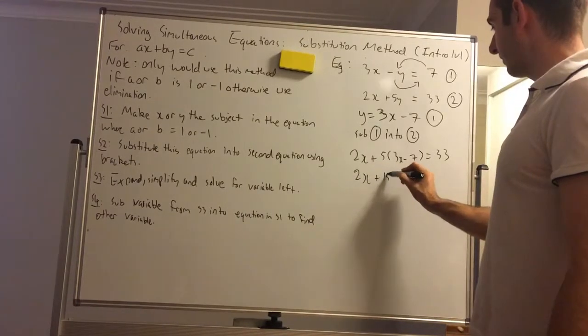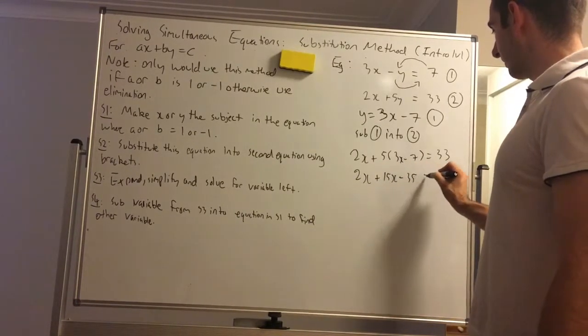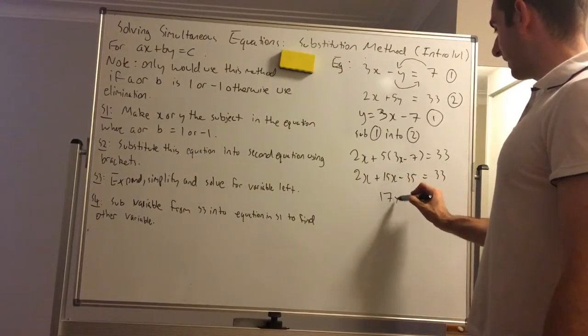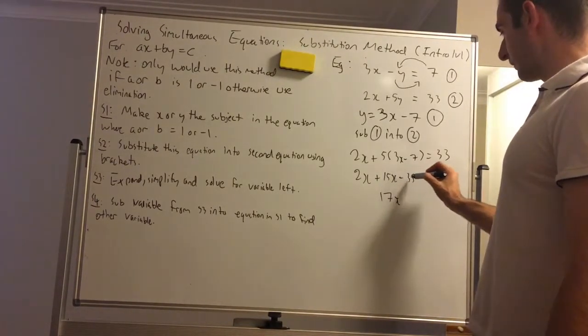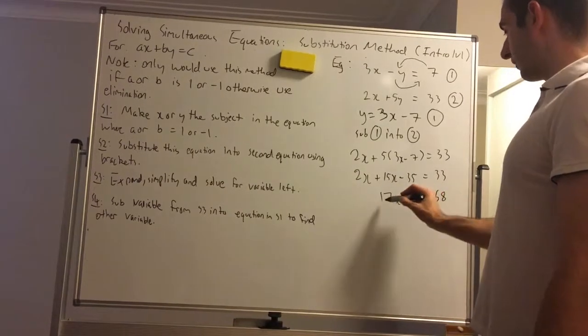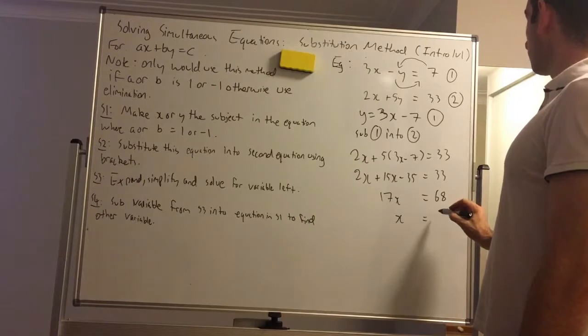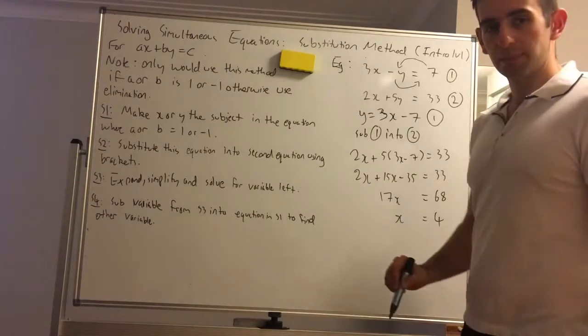So expanding, we have 2x plus 15x minus 35. So this turns into 17x. If I bring minus 35 over, it equals 68. Divide by 17 is 4. Alright, nice number.